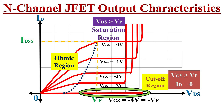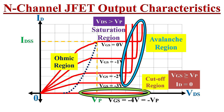Apart from these three regions, there is one more region known as the avalanche breakdown region. This region of operation should be avoided. In this region, the current is limited solely by the external circuit. Generally, data sheets show the maximum value of VDS — we must make sure our operating VDS is less than this maximum value.